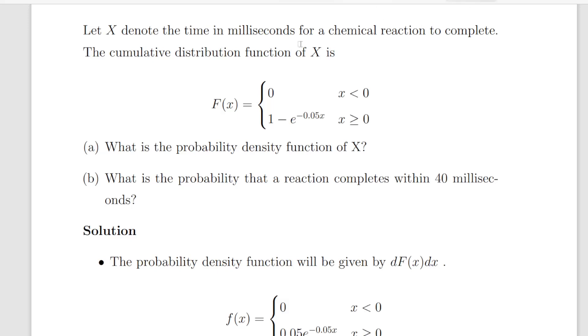Just a couple of things to remark upon there. Capital F of x is the symbol, the notation for the cumulative distribution function. And that is different from the probability density function which is small f of x, and we'll see that shortly.